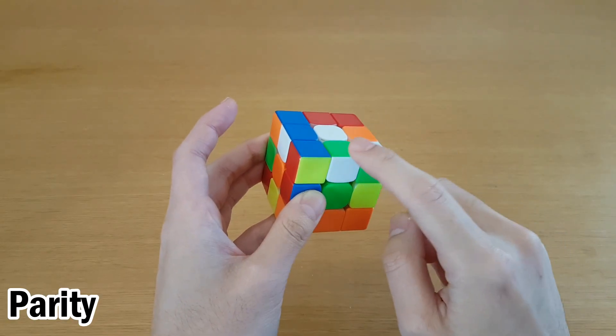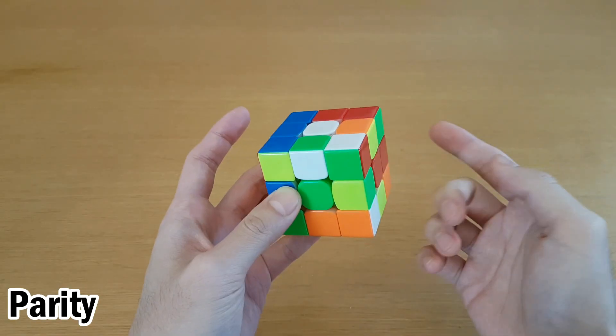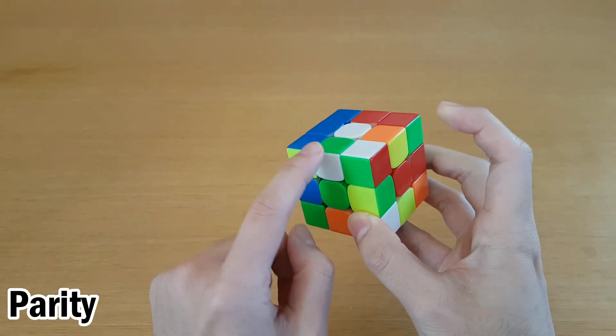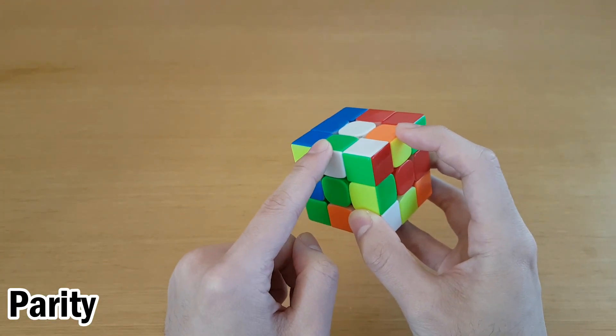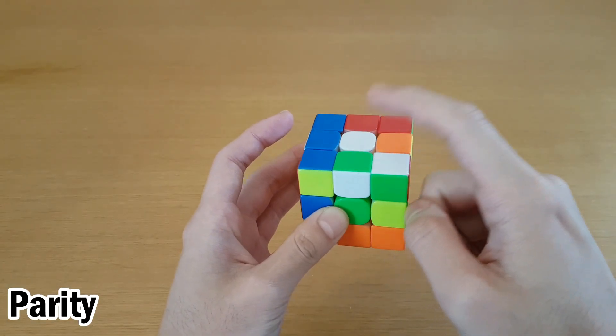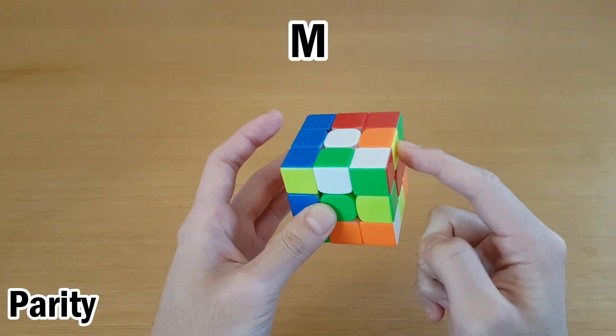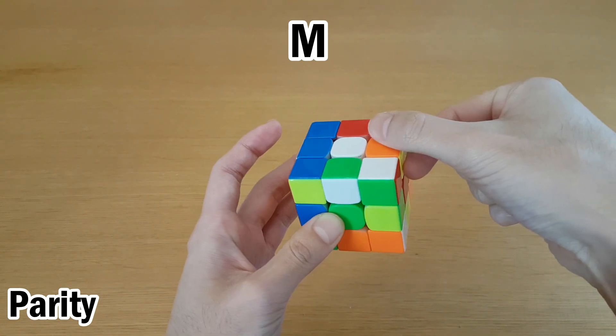In the solve, when I memorize edges, usually this would be the buffer and I would start a new cycle. But in this case, since there's parity, I need UF and UR in each other's positions. So in this case, the first thing I would memorize is here. And the reason is because this white-green belongs over here like this.